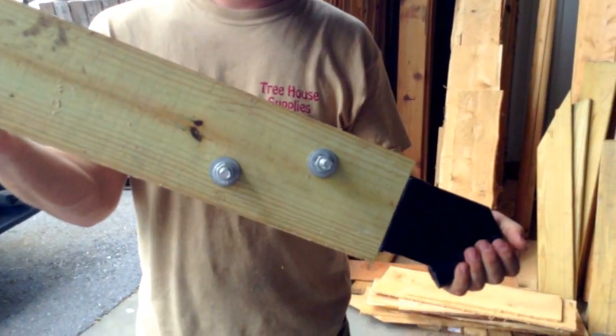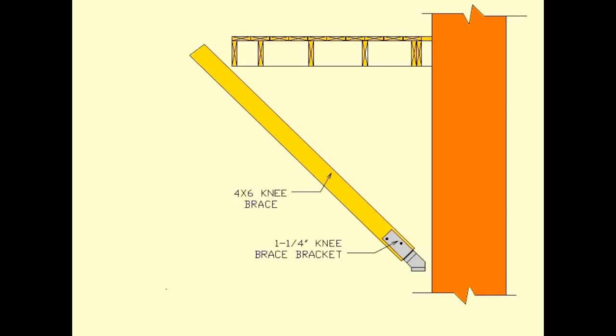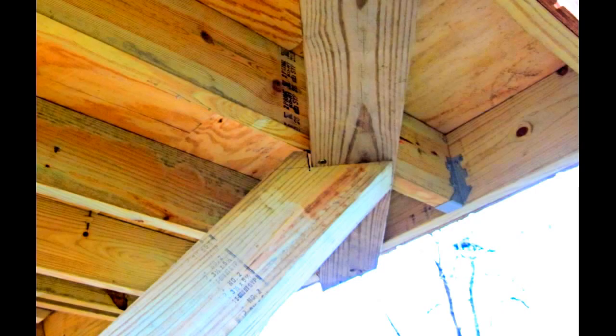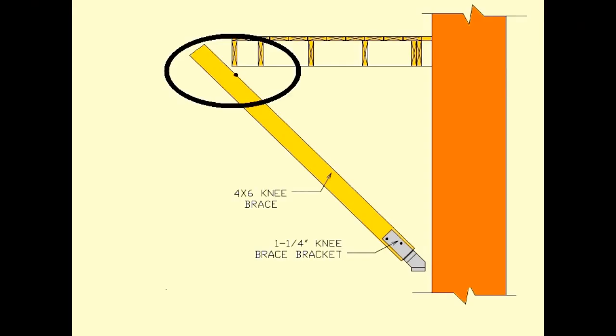It's now time to mark our top notch. With the help of a friend, hold the knee brace on a 45 degree angle against the tree and bottom of the joist you want it to support. If the joist is on an angle to the tree, you will need to install a board under the joists that is parallel with the tree for the knee brace to sit on. Now, make a mark at the top where the knee brace will fit into.